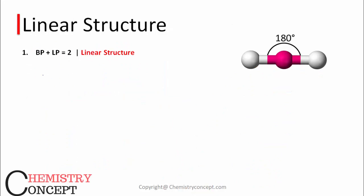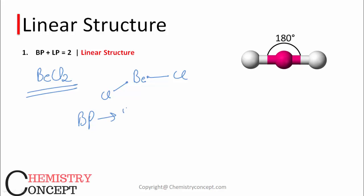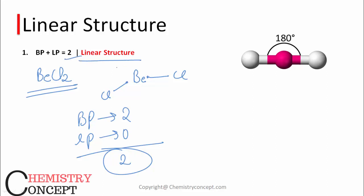First is linear structure. Example: BeCl2. Beryllium has 2 electrons in its valence shell, and both electrons are used for forming bonds with two chlorine atoms, so there is no lone pair left. Bond pair is 2, lone pair is 0, so bond pair plus lone pair is 2. The structure is linear with a 180-degree bond angle — beryllium in the center with chlorine on each side.